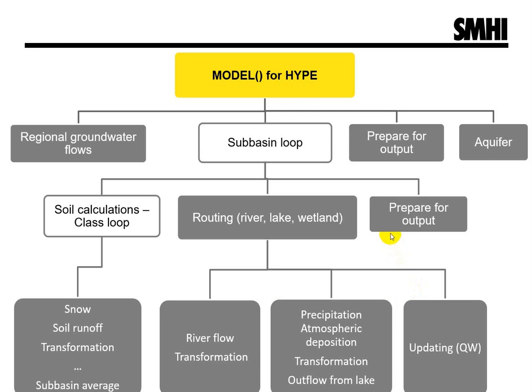Last in the sub-basin loop, sub-basin average values are calculated and the sub-basin results are transferred to specific output variables that will be available to IS. Additional output preparations are done after the main sub-basin loop, as well as calculation of aquifers.